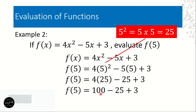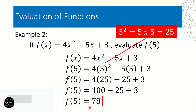4 times 25 is 100, copy minus 25 (from 5 times 5), copy plus 3. We do not add 25 plus 3 first — that would be wrong. We must go left to right: 100 minus 25 is 75, then plus 3 equals 78. So f(5) = 78.